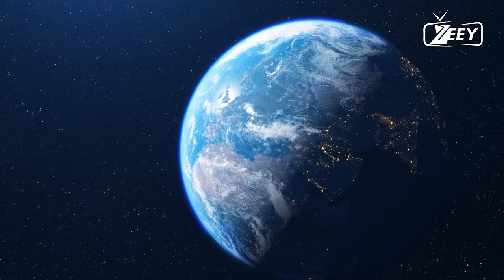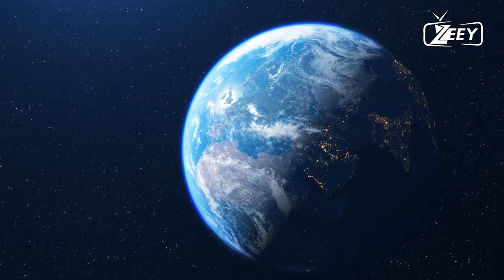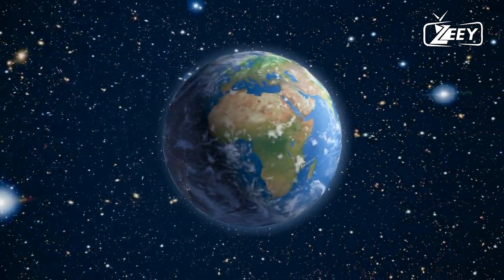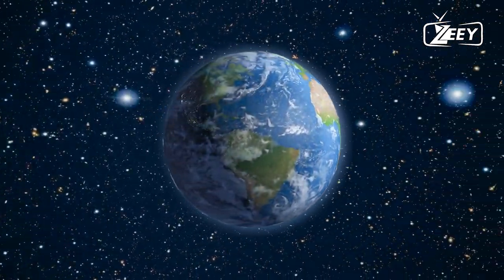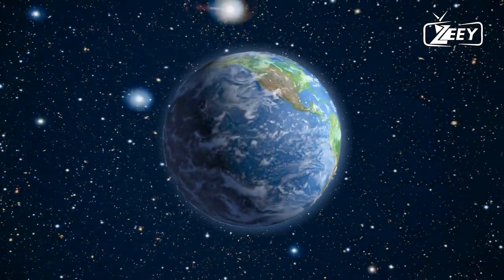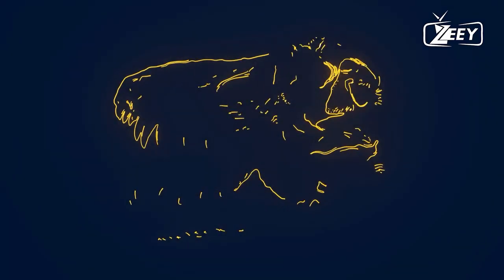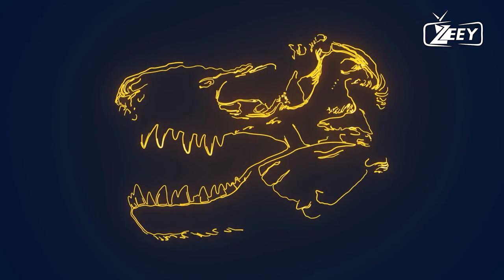Following the extinction of the dinosaurs, the Earth was a very different place during the Paleogene Period. The continents were still moving and changing shape, and the planet was much warmer than it is now, with tropical forests spreading across the globe and sea levels much higher.